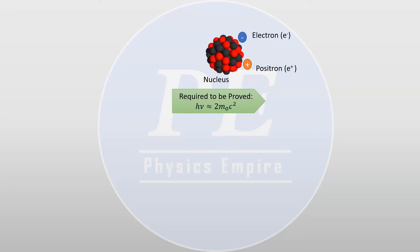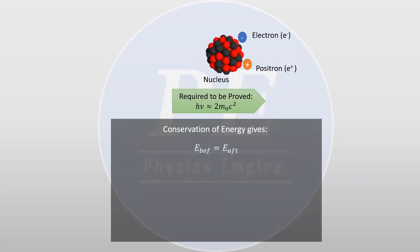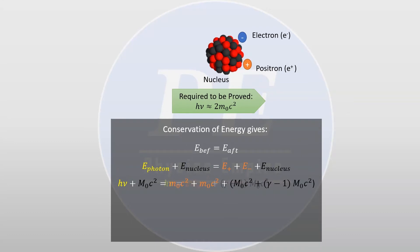To do so, we first proceed by the law of conservation of energy. Using the assumption in the given that the rest energy of the nucleus is much higher than the energy of the photon, the nucleus will not attain relativistic speeds, and we can make the classical approximation of the kinetic energy to get the following result.